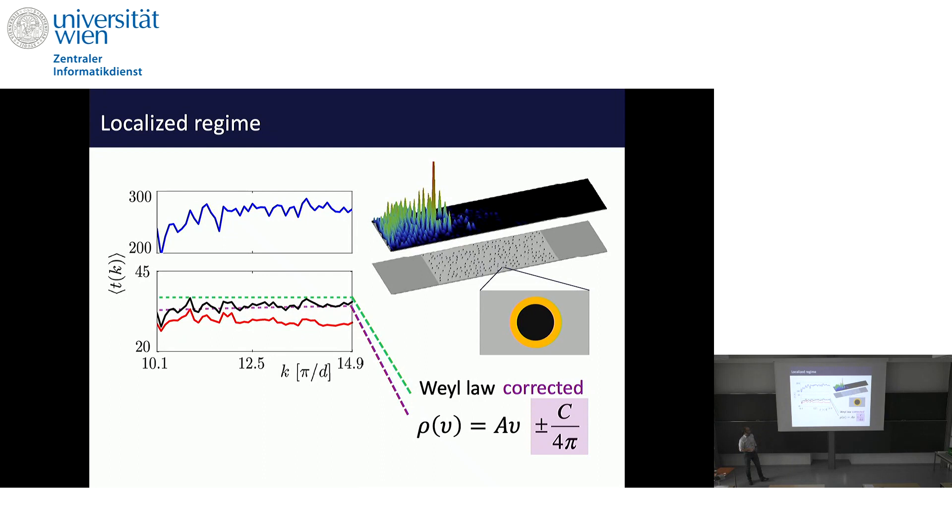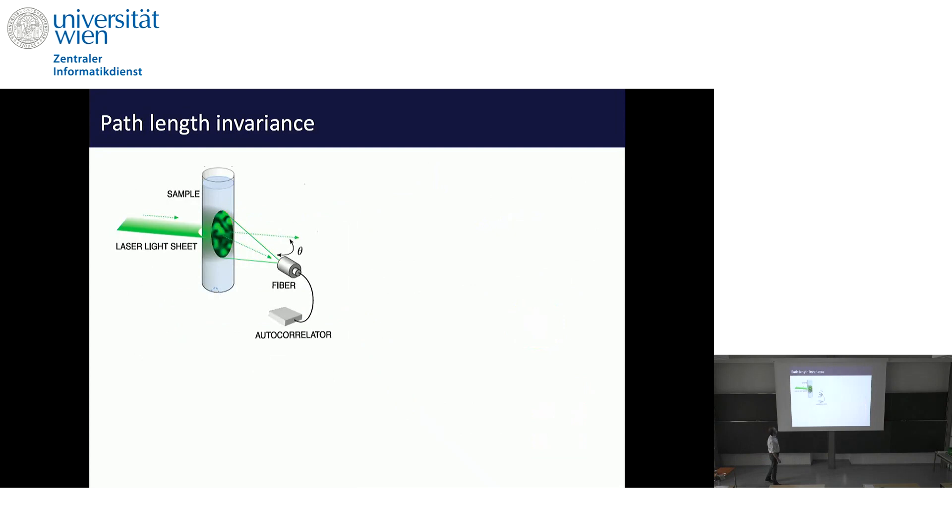This is why the Weyl law is modified. It's the first order correction term. By the way, if you have Neumann boundary conditions, then you have an increased density of states, not a reduced density of states, and this can also be shown. So we saw this in numerics.